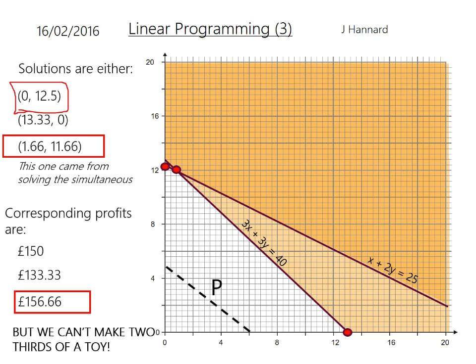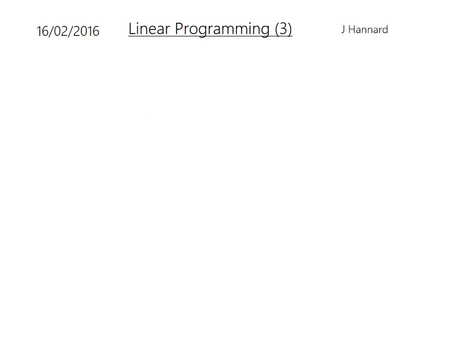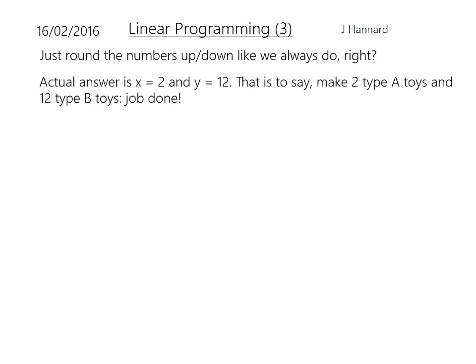You can't make two-thirds of a toy, and the examiners do guide you into this by saying they want integer solutions. We don't want you to do two-thirds of a toy, because some child's going to be very upset if they only get two-thirds of a toy on Christmas Day. So how do we deal with that? Just rounding numbers up or down like we always do — you can do that, but it's a bit clumsy. The actual answer is x = 2 and y = 12, that is, make two type-A toys and 12 type-B toys — but let's check that.